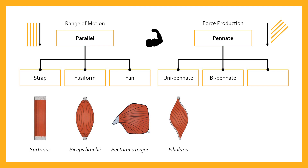The second type is bipennate — 'bi' meaning two. Bipennate muscles have fibers on two sides of a tendon. The rectus femoris of the quadriceps is a really good example, and is associated with significant force production.